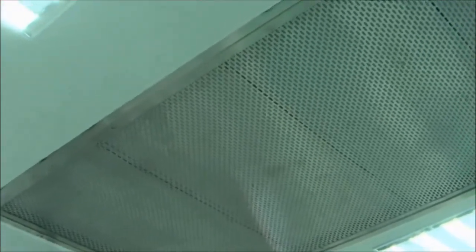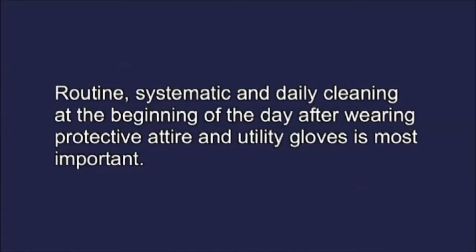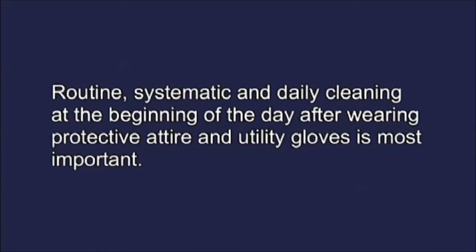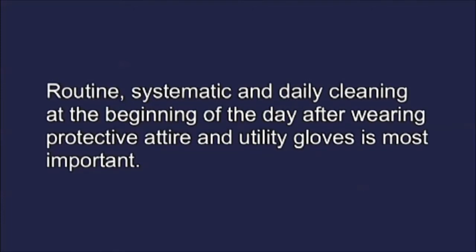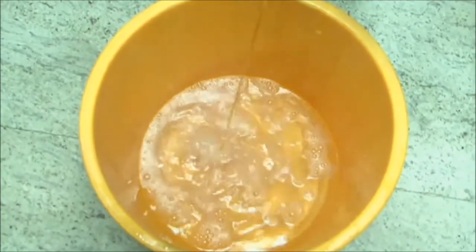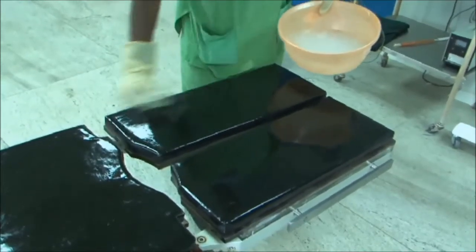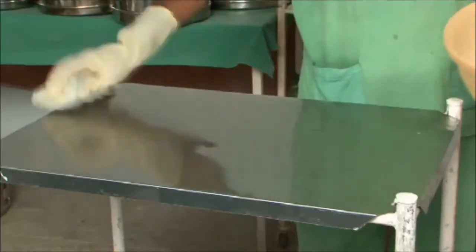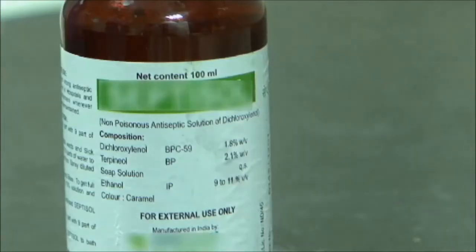The operation theater should be centrally air conditioned with an air handling unit. Routine, systematic and daily cleaning at the beginning of the day after wearing protective attire and utility gloves is most important. Clean the floor and sinks with detergent or soap water and keep the floor dry. Clean table tops and other surfaces like light shades, almirahs, lockers, and trolleys with low-level disinfectant phenol, that is carbolic acid 2%.